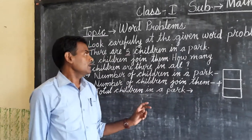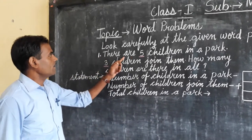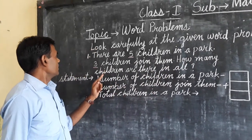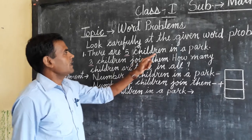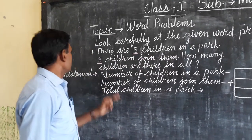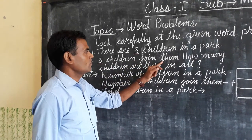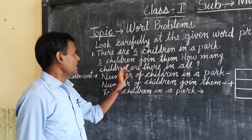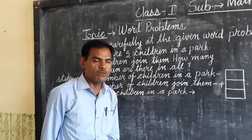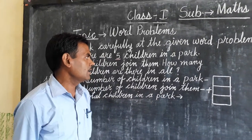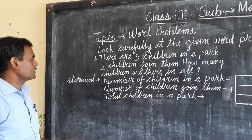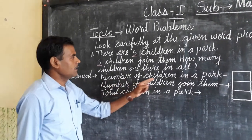Number one example: there are five children in a park. Three children join them. How many children are there in all? First, you write that statement like this. Number one statement is: number of children in a park.